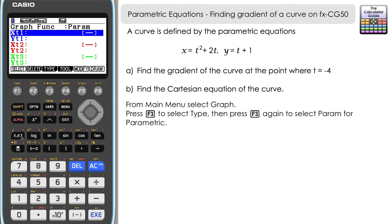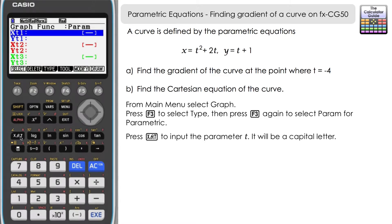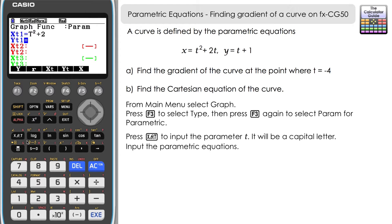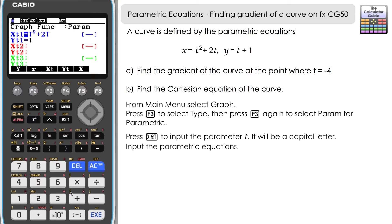We're only going to use the top pair: xt1 and yt1. The colour is blue, so we'll produce a blue graph. To input the equations, use the button with x, theta, and t — it will appear as a capital T. Input t squared plus 2t for x, press execute, then input t plus 1 for y.